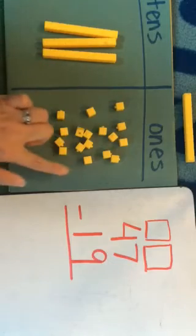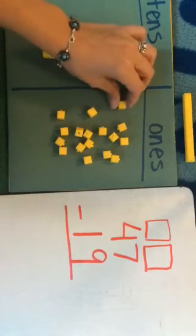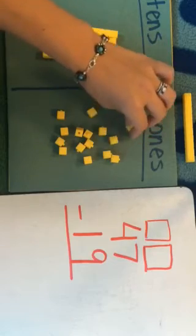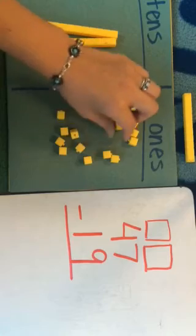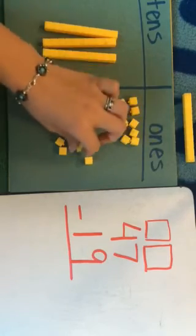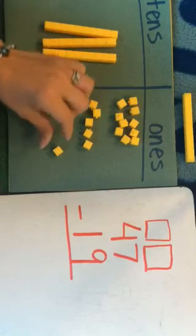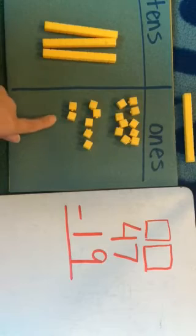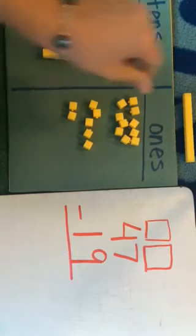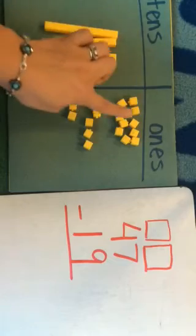So now I have my ten ones and I have my seven ones here. So we're going to add these together. We have one, two, three, four, five, six, seven, eight, nine, ten, eleven, twelve, thirteen, fourteen, fifteen, sixteen, seventeen. So now I have seventeen ones. I'm going to move this to the side here because we have that ten right here already.